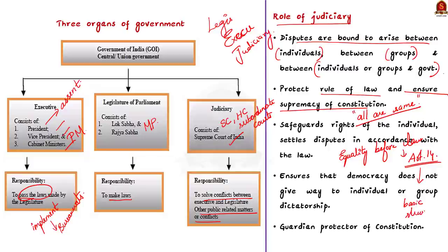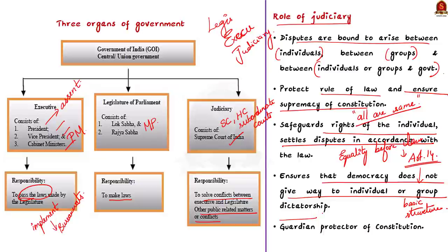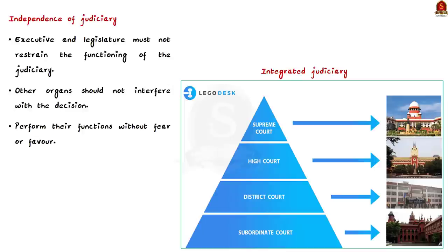The judiciary safeguards the rights of individuals, settles disputes in accordance with the law, and ensures that democracy does not give way to individual or group dictatorship. From the citizen's point of view, judiciary is the most important organ because it acts as their protector against the possible excesses of the legislative and executive organs. The judiciary is the guardian protector of the constitution and the fundamental rights of the people. To perform this function, it is important to ensure the independence of judiciary. Note that independent and integrated judiciary is a salient feature of the Indian constitution.